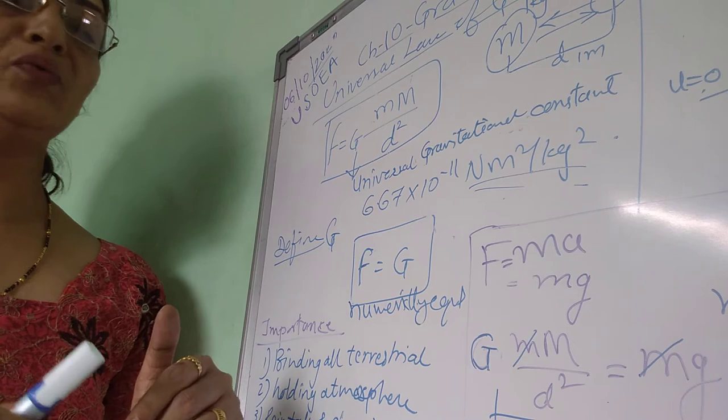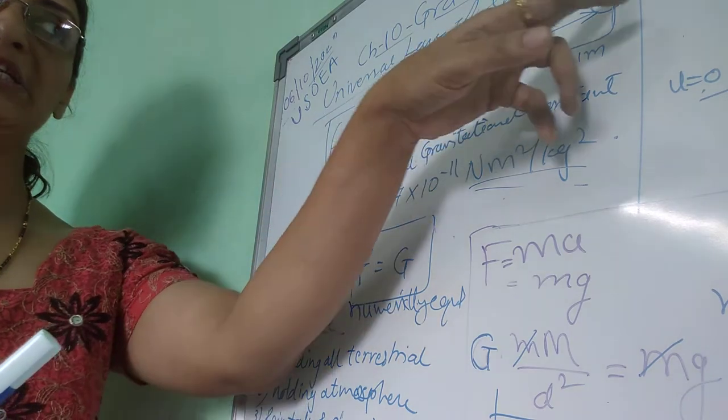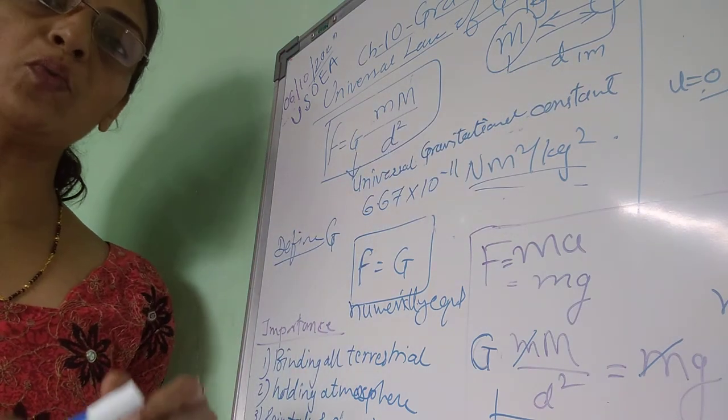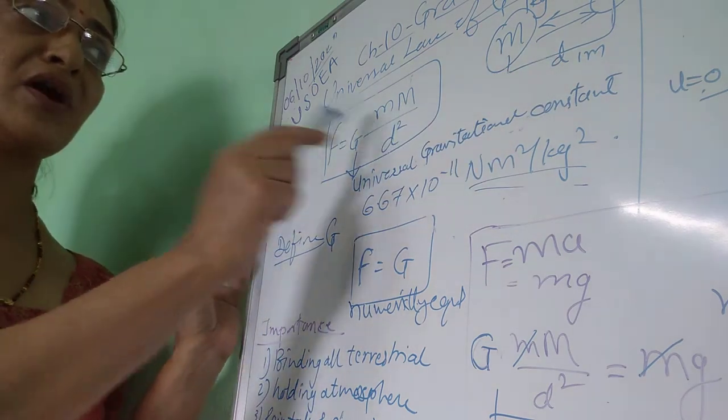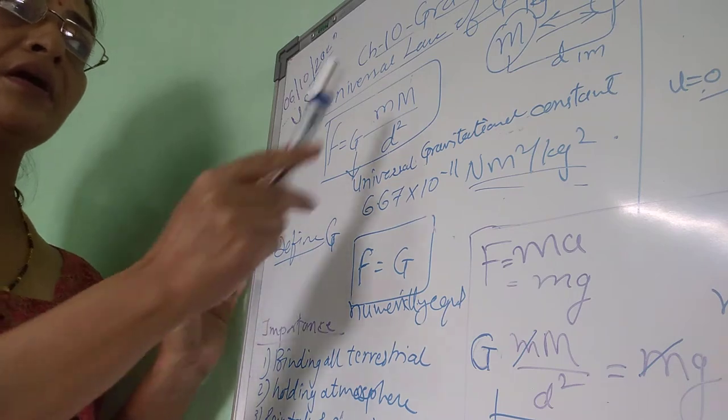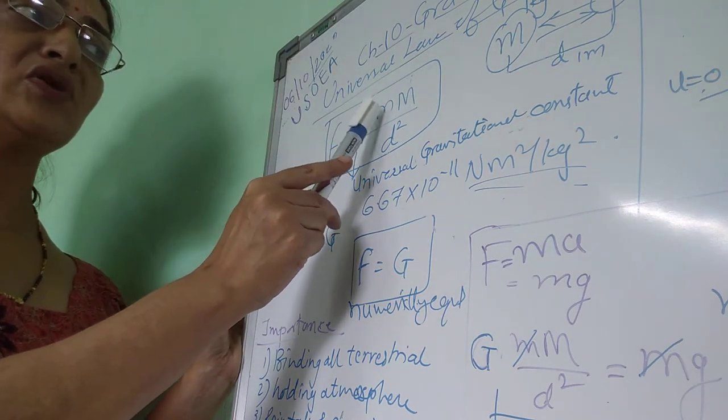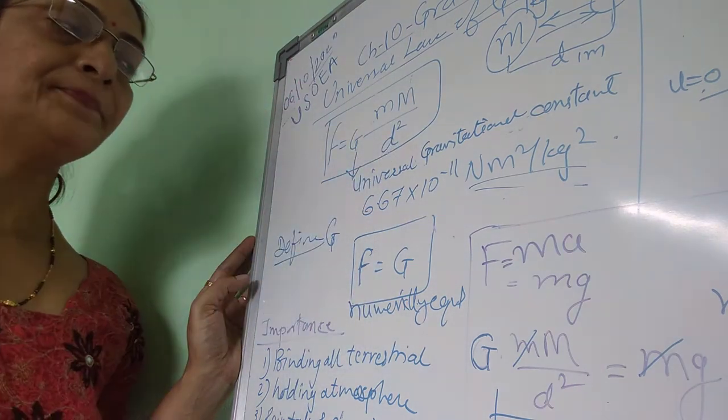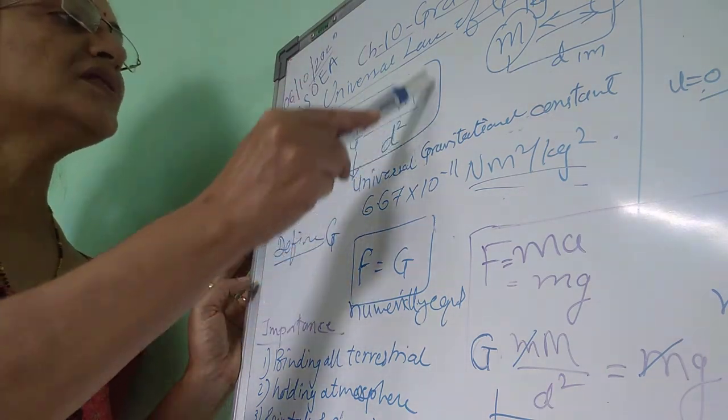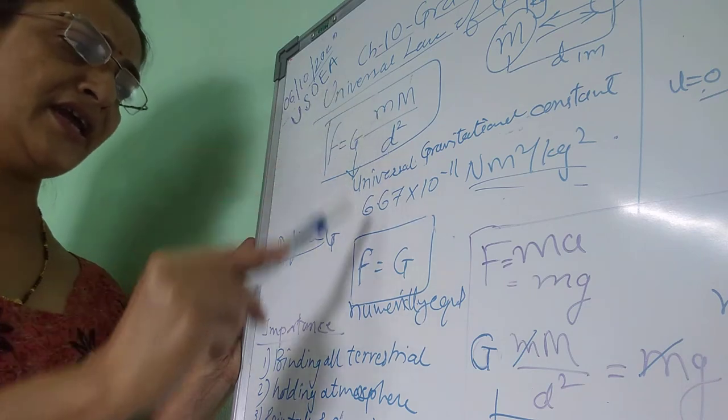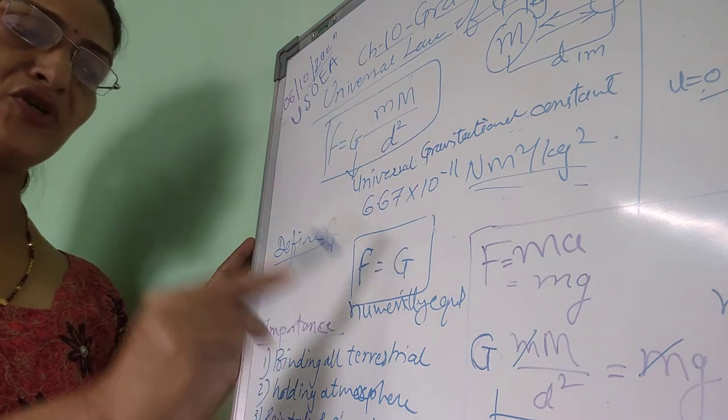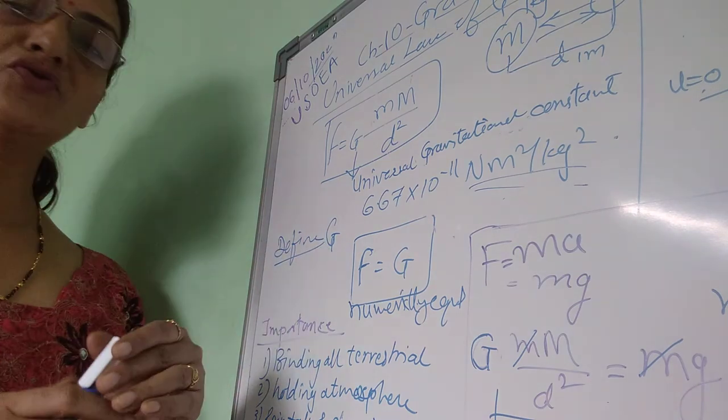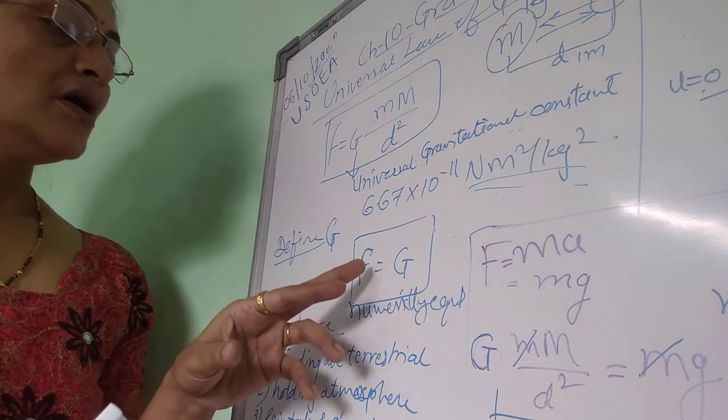What we can do is keep the masses each of 1 kg and keep the distance d equal to 1 meter. What will happen in this formula if we keep capital M and small m values equal to 1, as well as d equal to 1? All these will become 1, and hence we will get F equals G. This should be found if it is asked to give the definition: F equals G.